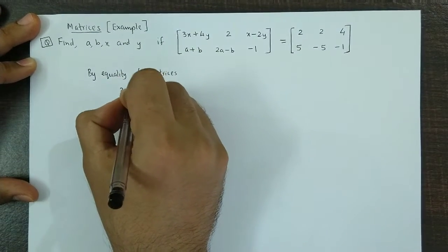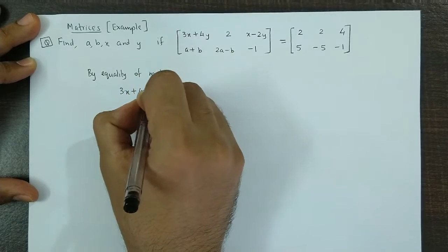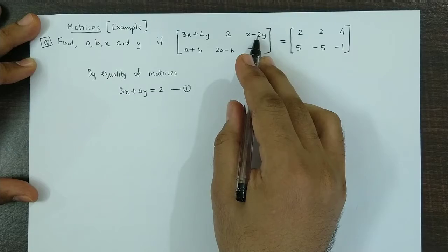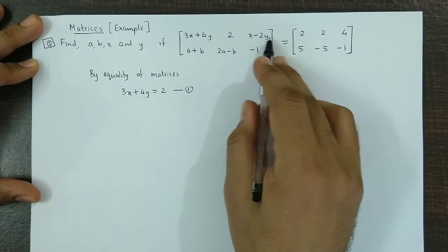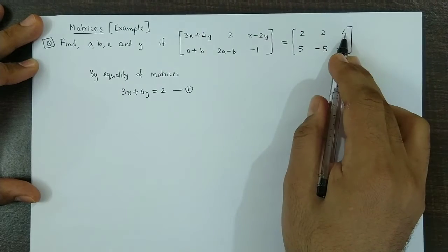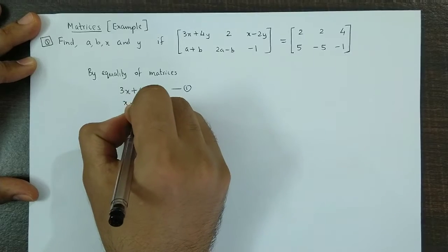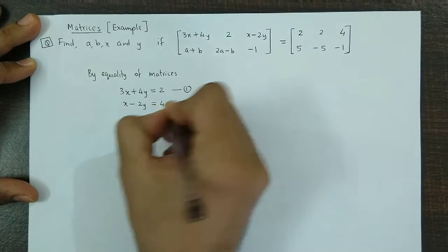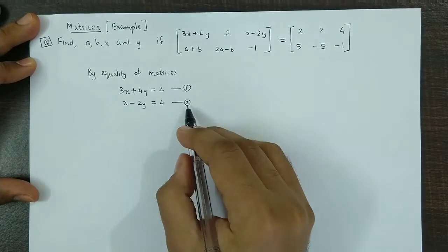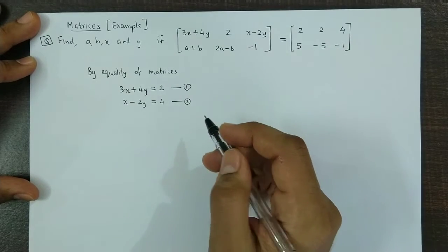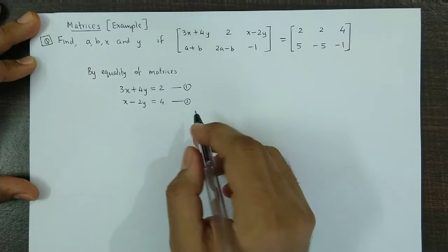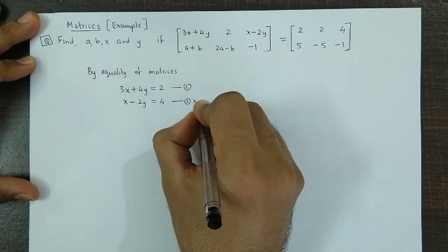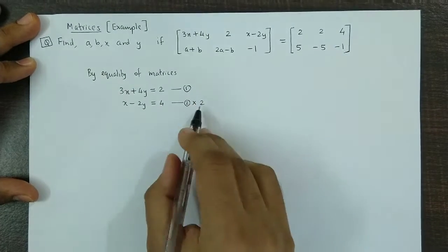Then the next element gives X minus 2Y equated to 4, so X minus 2Y equals 4. Now if we solve these two equations we obtain the values of X and Y. To eliminate Y, we multiply equation 2 by 2.